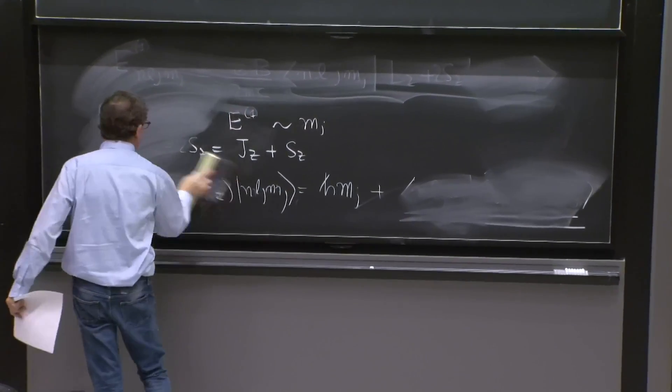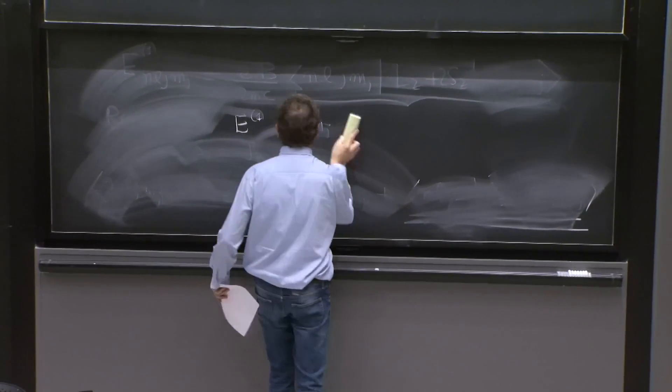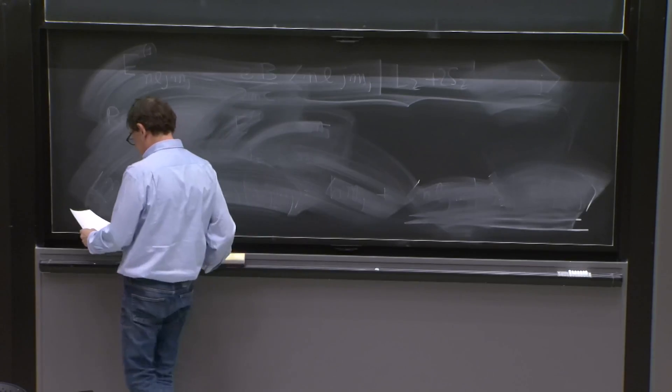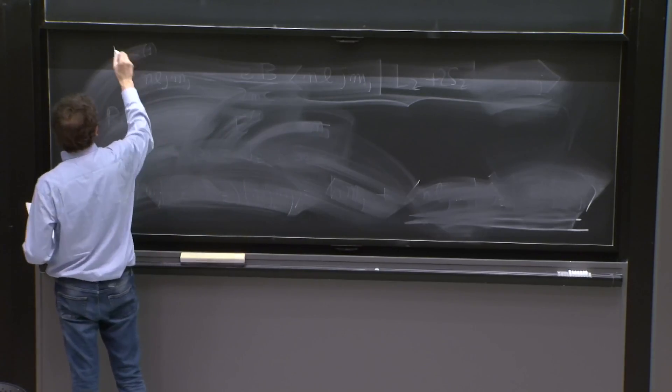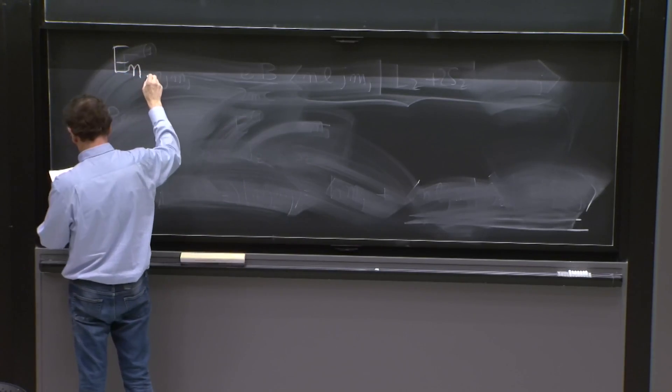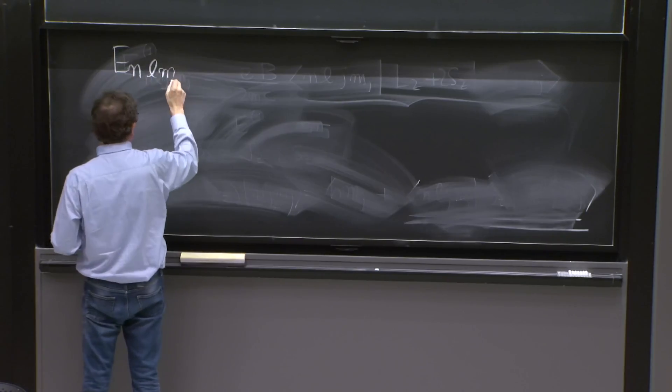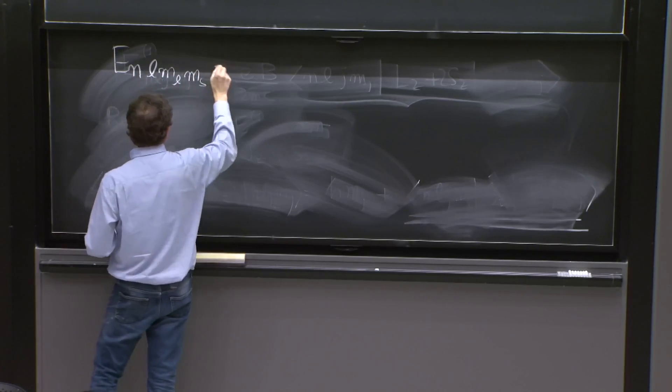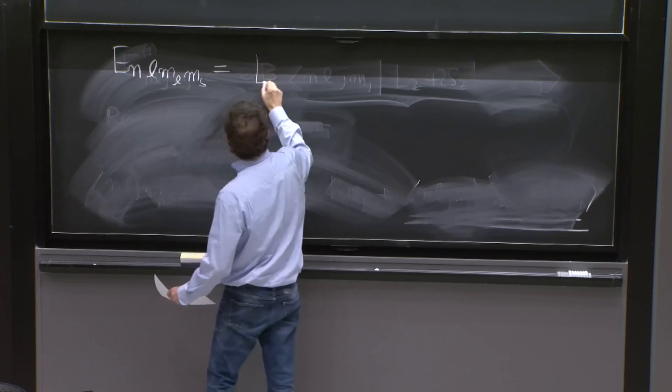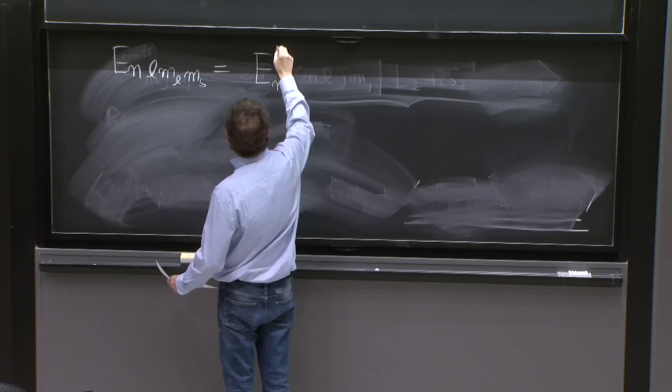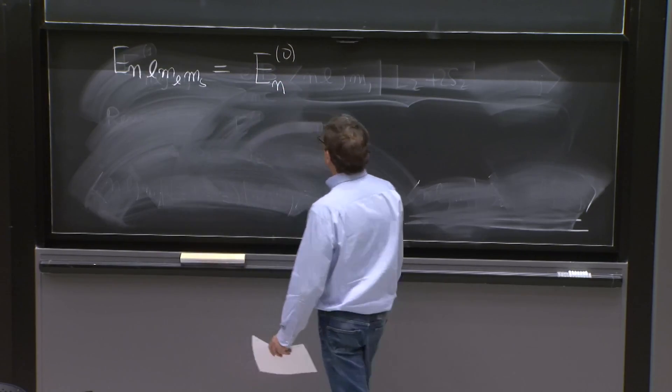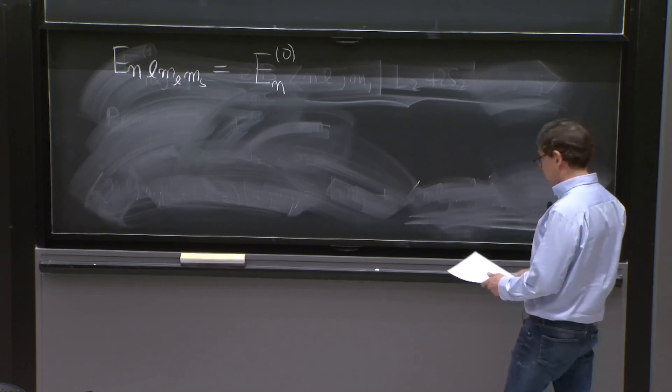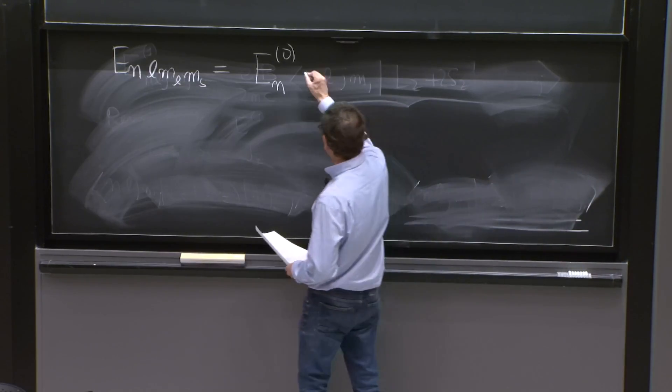With eigenenergies as follows. There are no mystery, the eigenenergies. These are very simple. The eigenenergies are En, L, ML, MS exact, are En0.